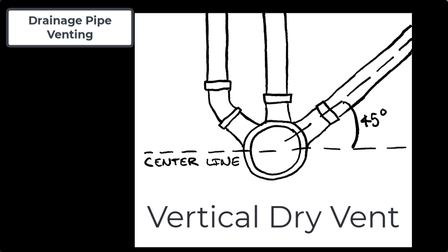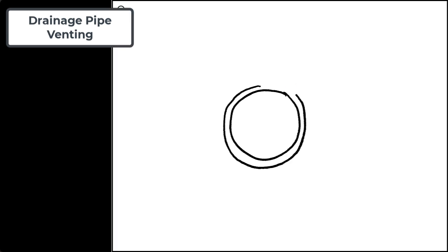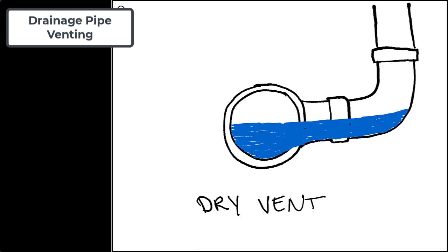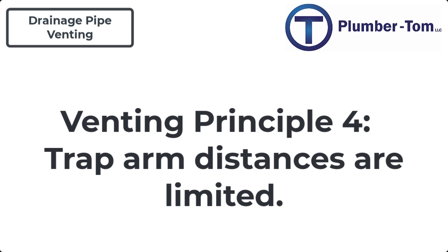If a dry vent comes off horizontally from the side of the drain, waste could build up in that pipe and block the vent. Some codes require a six inch vertical rise above the flood level rim.